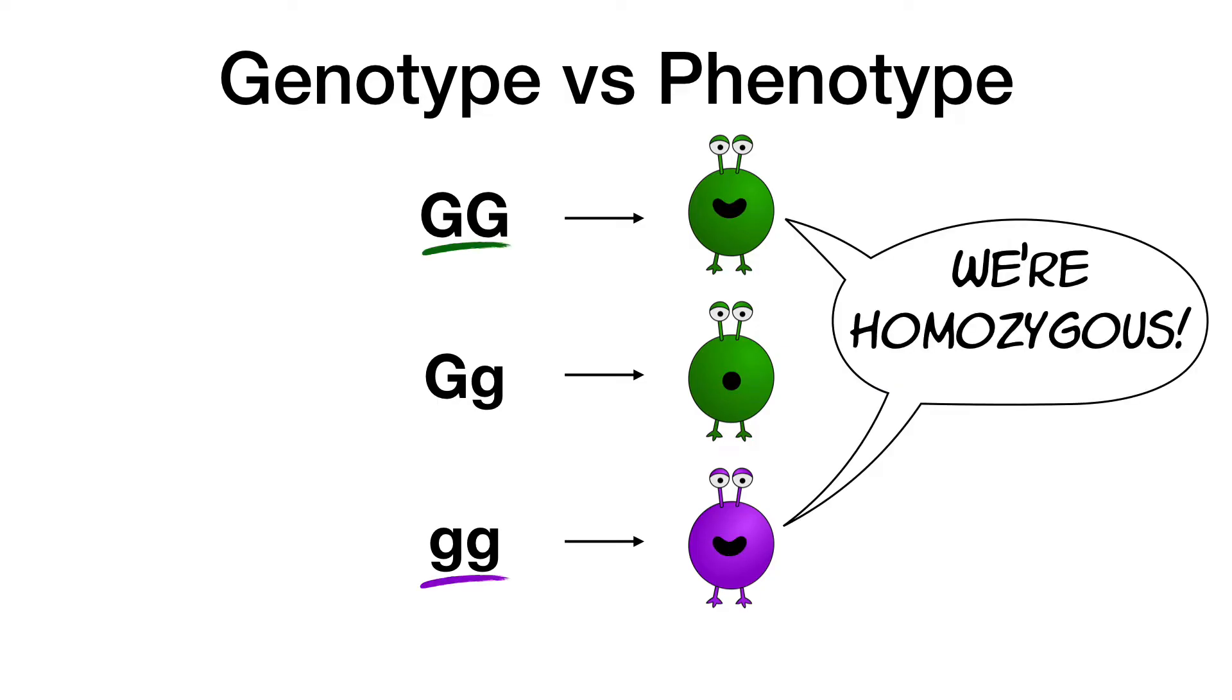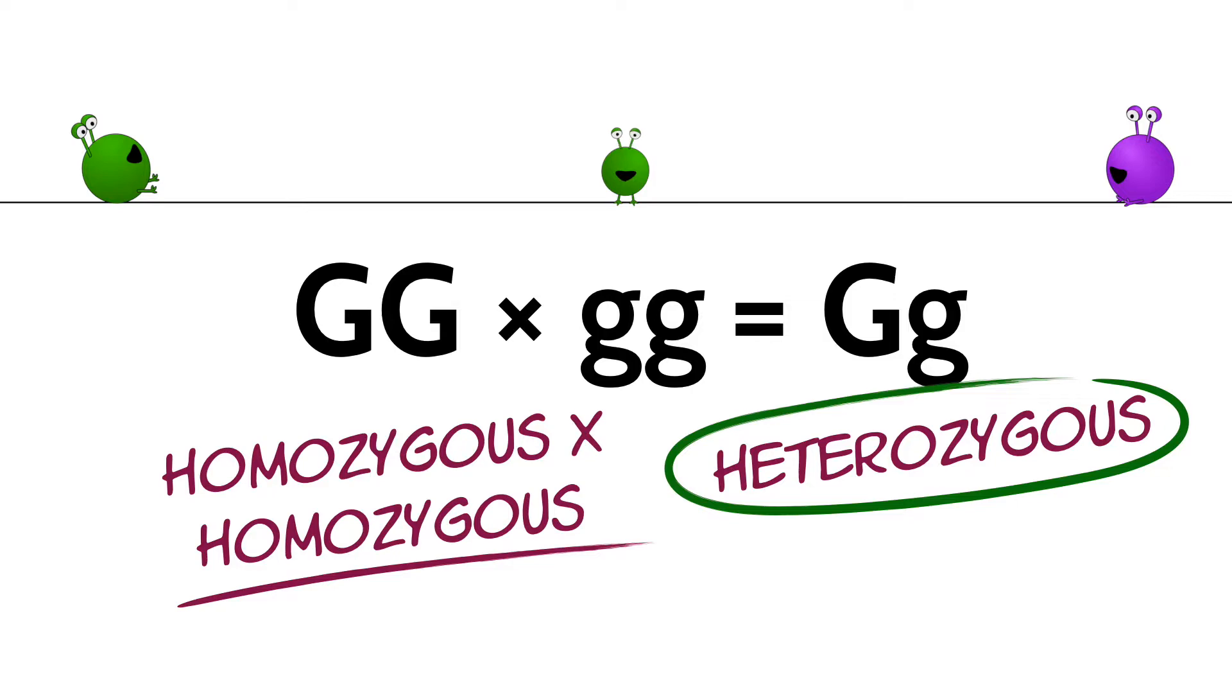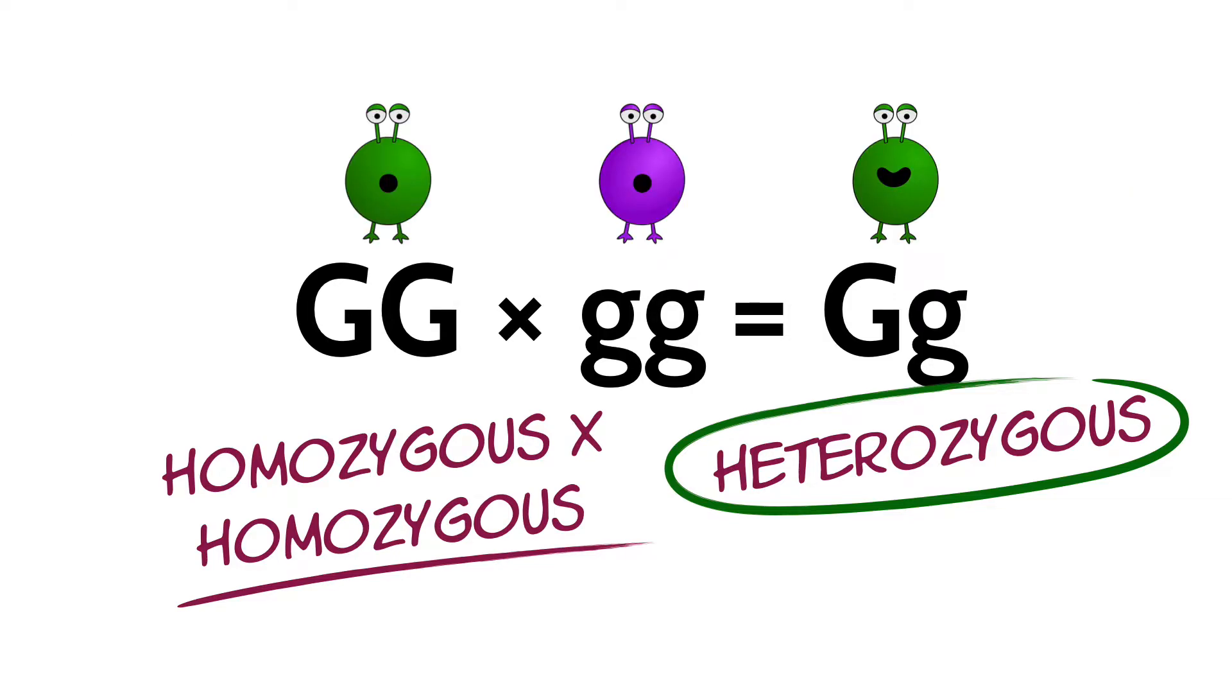Aliens that have the same copy of a gene are called homozygous. In this cross of a homozygous dominant and a homozygous recessive alien, the offspring will all be heterozygous. That means they have two different versions of the gene.